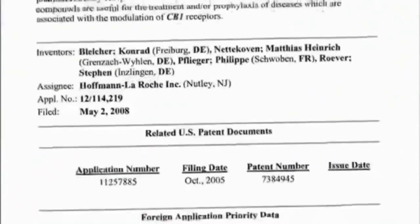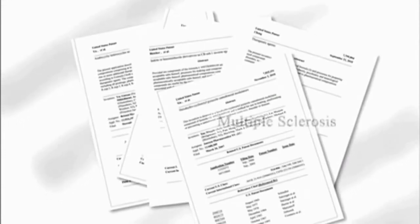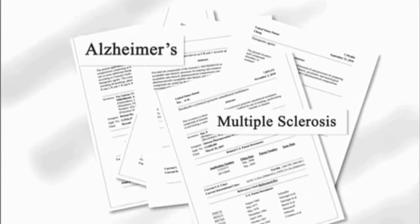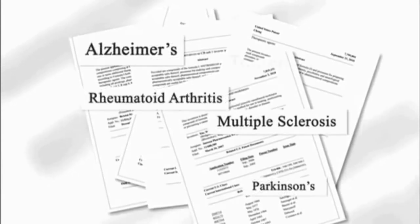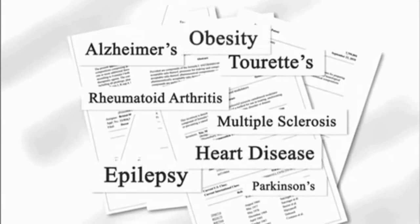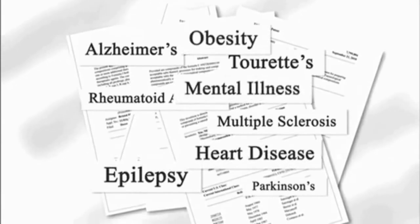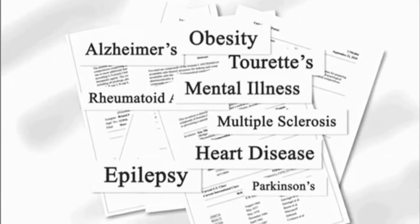A search of the U.S. patent database reveals numerous large pharmaceutical companies have filed recent patents claiming their cannabinoid receptor drug has the potential to treat almost everything: multiple sclerosis, Alzheimer's, Parkinson's, rheumatoid arthritis, Tourette's, epilepsy, heart disease, obesity, various mental illnesses, and the holy grail of medicine, a cancer cure.